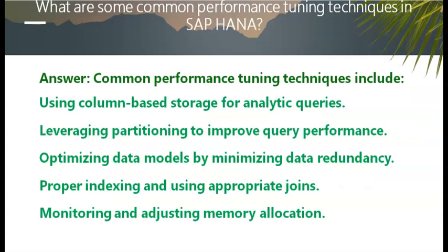What are some common performance tuning techniques in SAP HANA? Common performance tuning techniques include: using column-based storage for analytic queries, leveraging partitioning to improve query performance, optimizing data models by minimizing data redundancy, proper indexing and using appropriate joins, and monitoring and adjusting memory allocation.